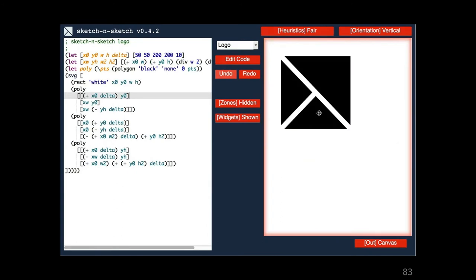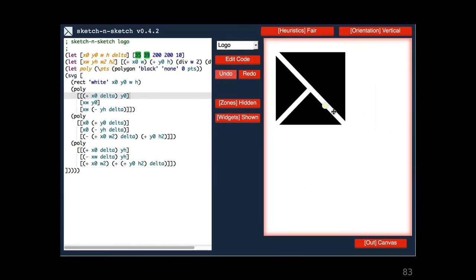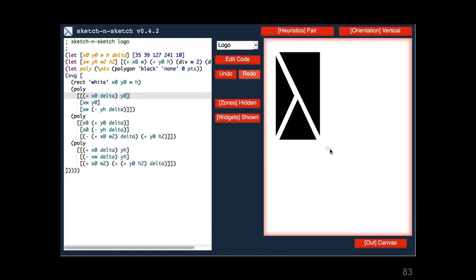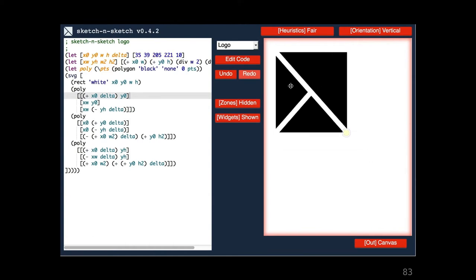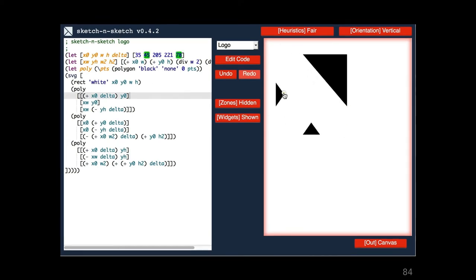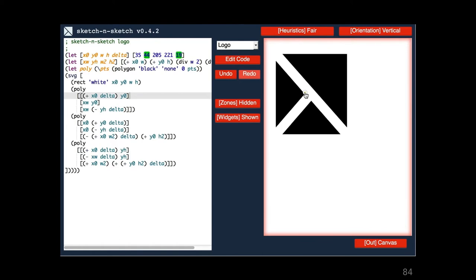Here's our Sketch and Sketch logo. The position of the three polygons is calculated relative to a white rectangle behind the design. By grabbing this rectangle, we can move and scale the entire design similar to a traditional direct manipulation editor. Unlike a traditional editor, the spacing between the polygons is encoded with a single parameter, which we can manipulate directly to change the thickness of the lambda symbol in our logo.